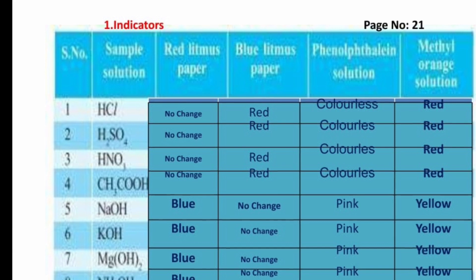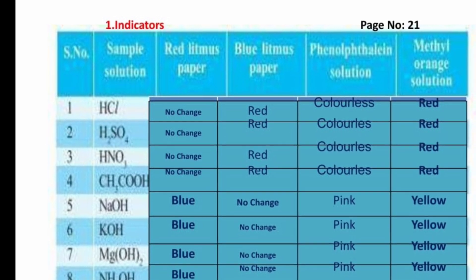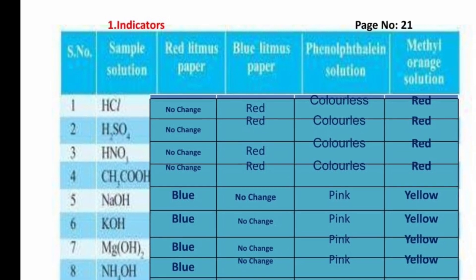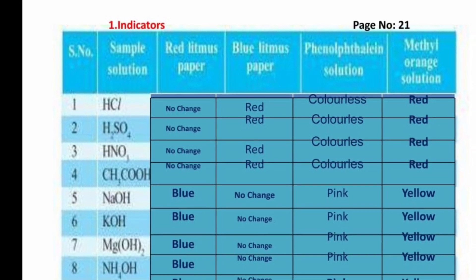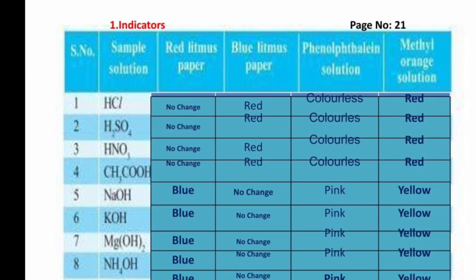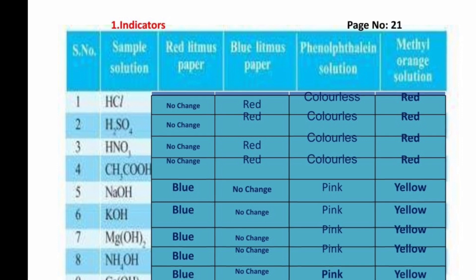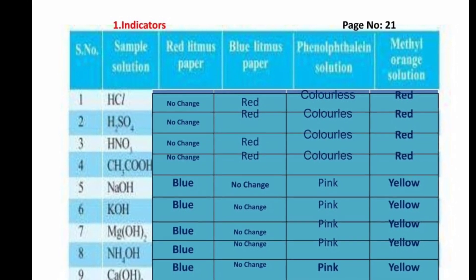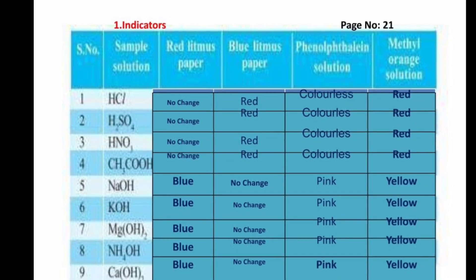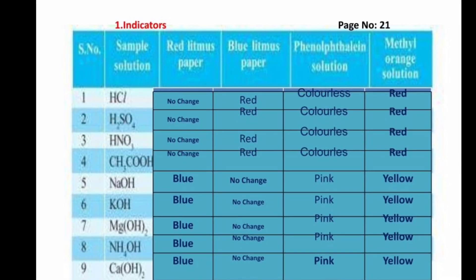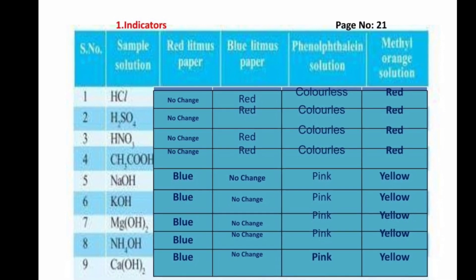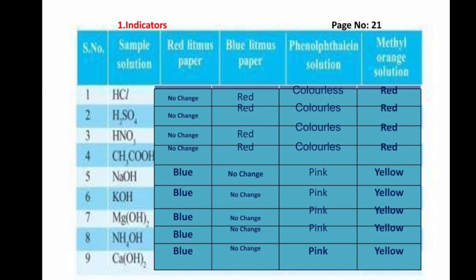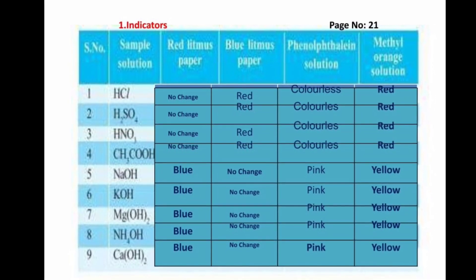In the textbook on page 21, there is an important table with serial number, sample solution, red litmus paper, blue litmus paper, phenolphthalein, and methyl orange columns. Substances include HCl, H2SO4, HNO3, CH3COOH, NaOH, KOH, and Mg(OH)2. We have already revised those color changes — you can fill in that table using what we have discussed.